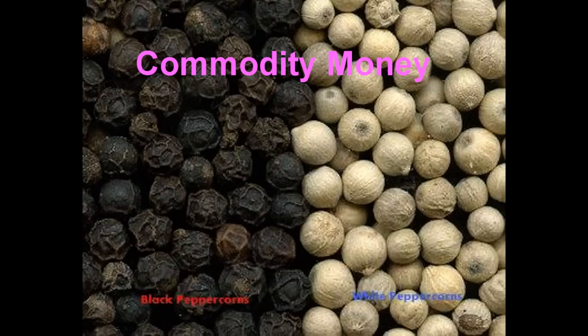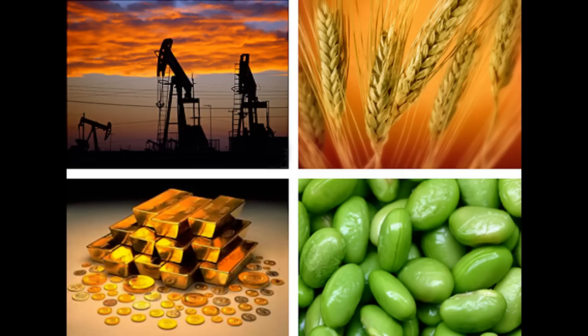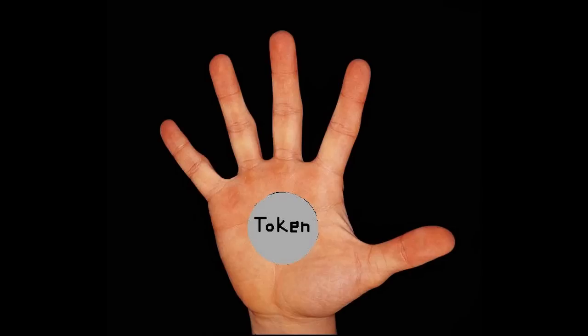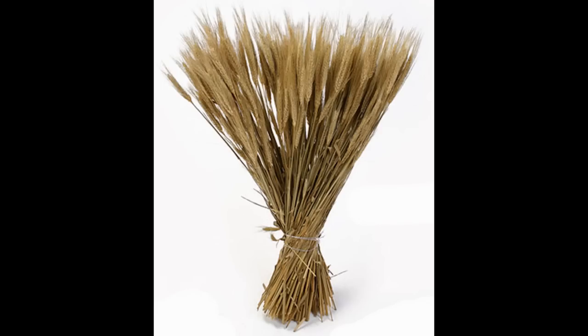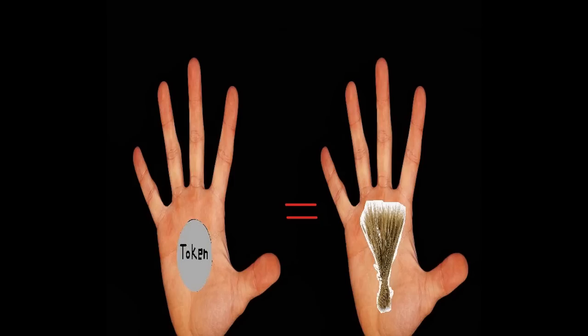The history of money began with commodity money, since there were problems with barter. Commodity money were items that represented value, such as a token. The value of a token is perceived by the user who recognizes the value of the token and the good it represents. Having a token for a specific weight of wheat must be the same economically as having the wheat at hand. This is what gives commodity money its value.